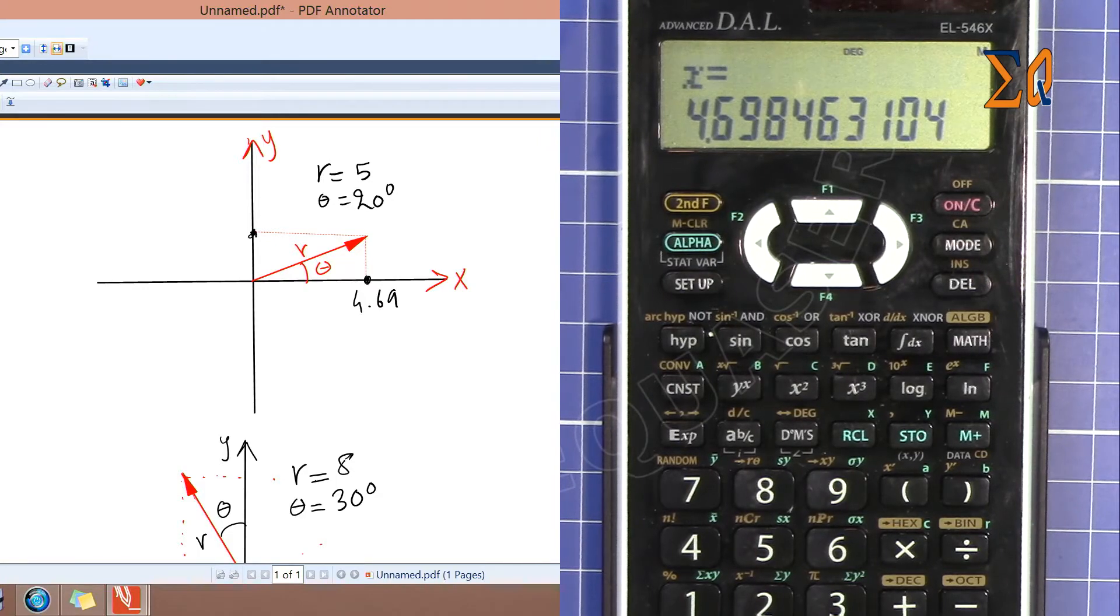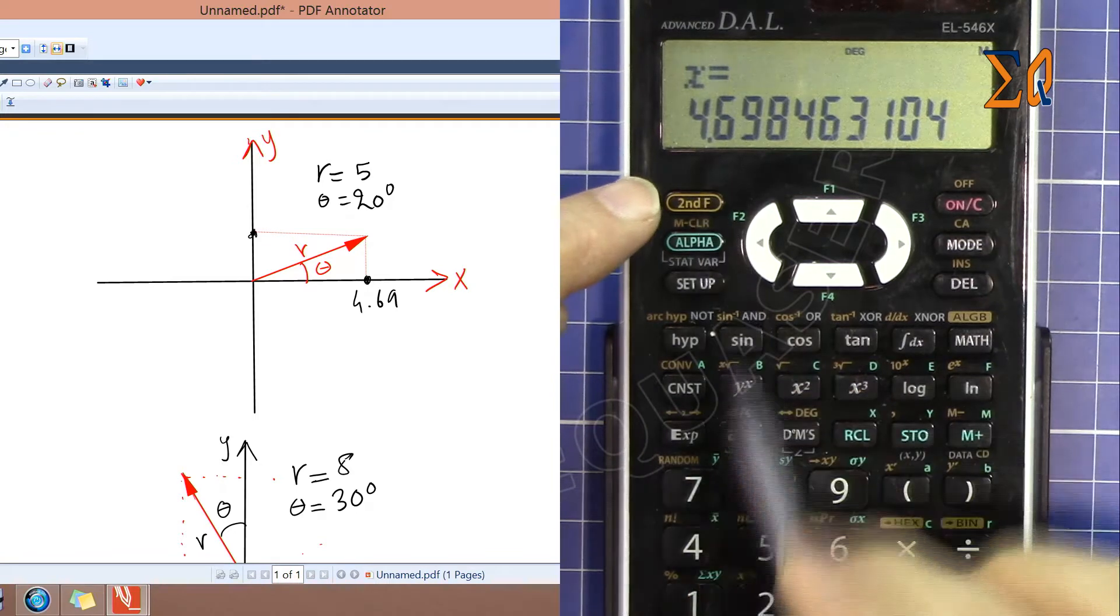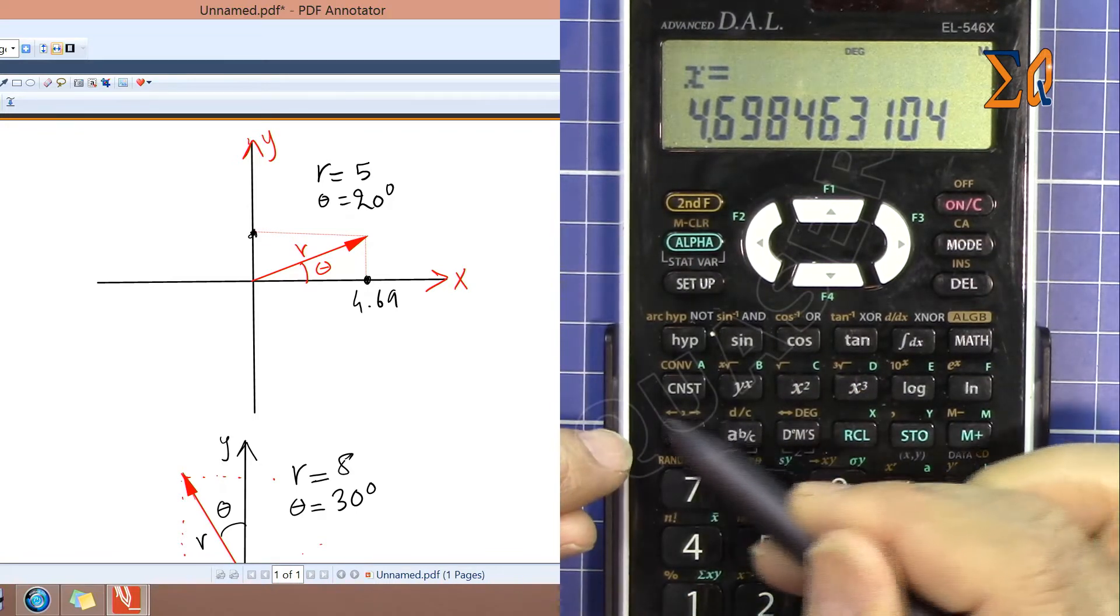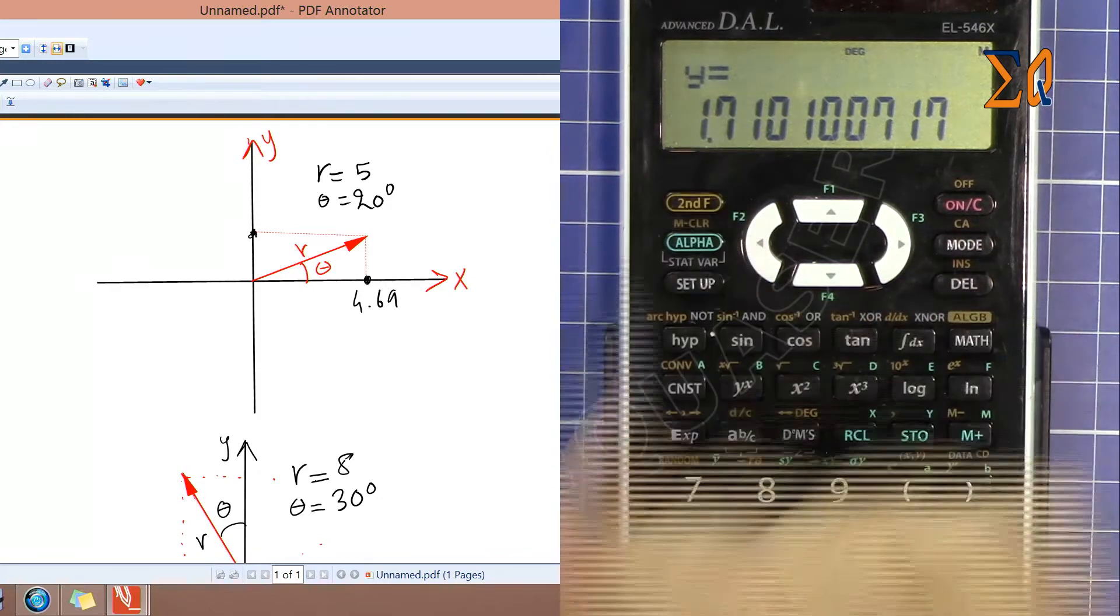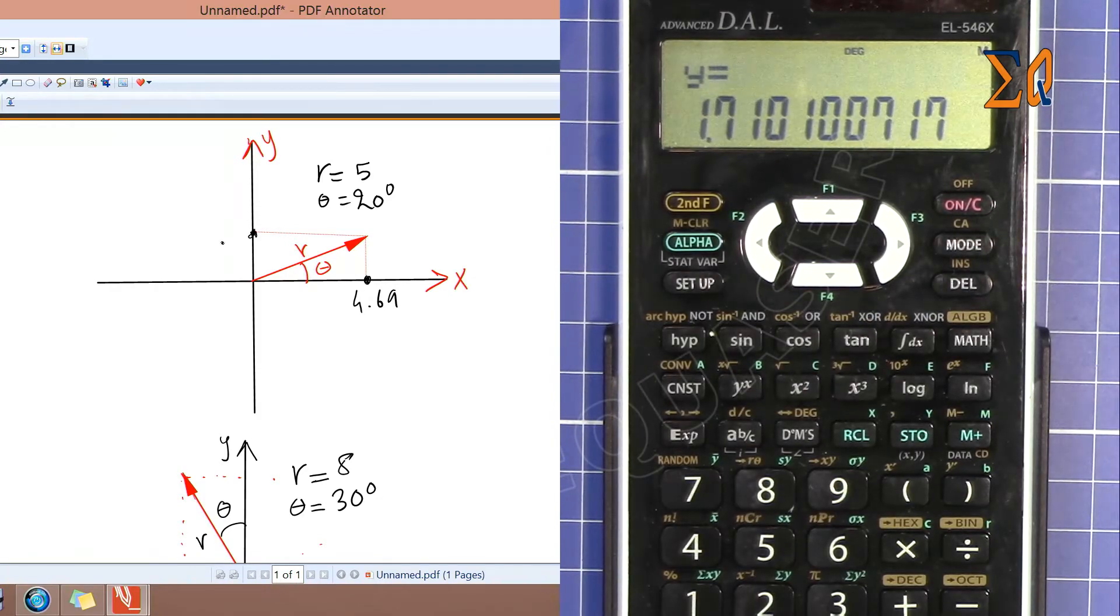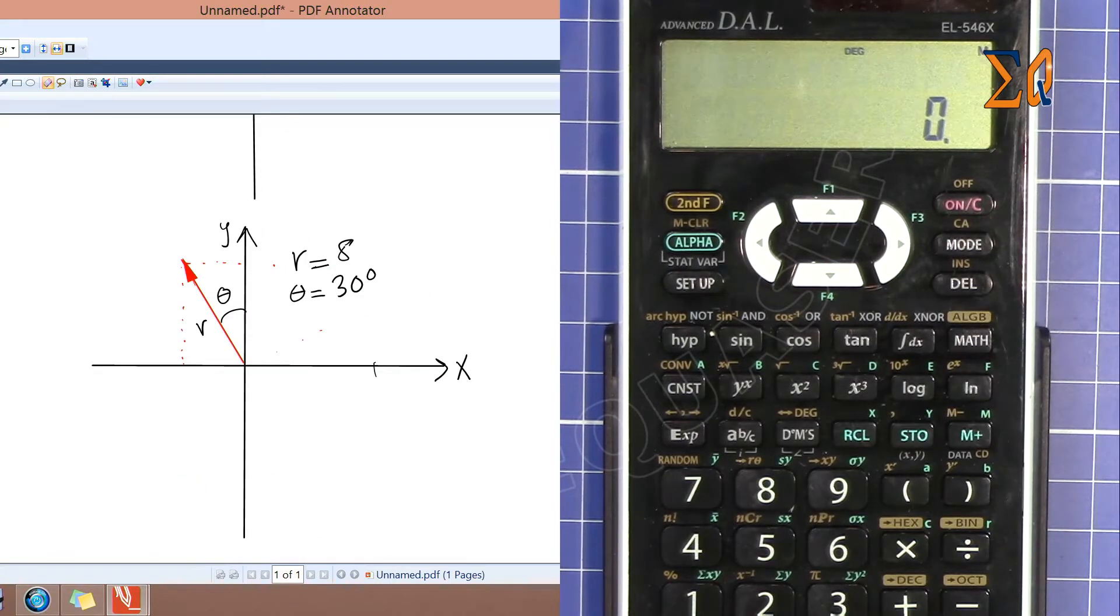Now to get the Y value, press second function and this button—this arrow shows between the comma—and Y is 1.7.